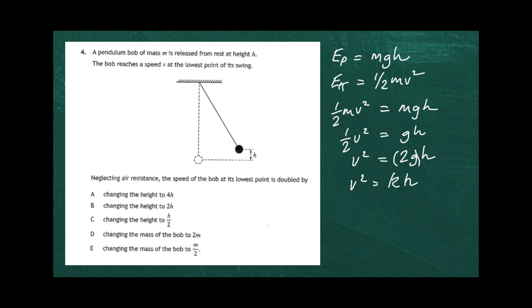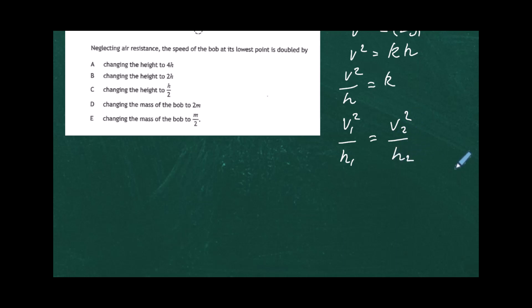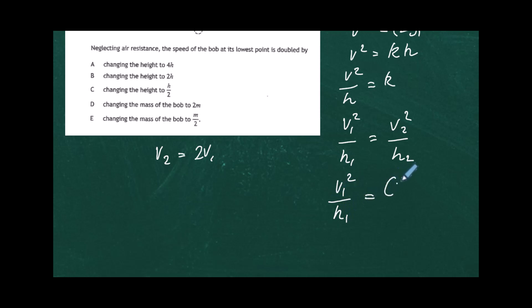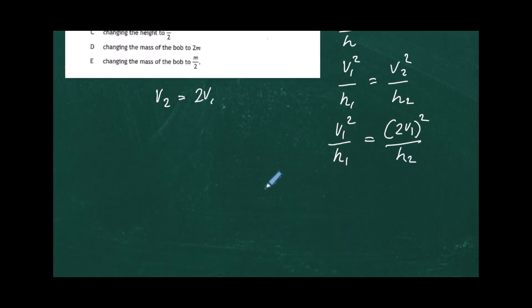Using the proportionality relationship, v squared divided by h equals a constant k. Therefore v1 squared divided by h1 equals v2 squared divided by h2. Our condition is that v2 must equal double v1, so we substitute v2 equals 2v1.